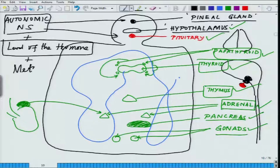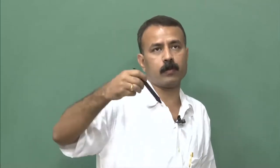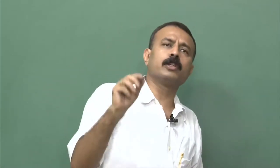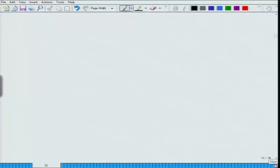These are the three levels of control — autonomic nervous system, hormone level feedback, and metabolites such as sodium, glucose, and thousands of other things — which regulate all the different endocrine glands: pituitary, hypothalamus, adrenal, and all the others. From here we will move on to the mechanism of action.